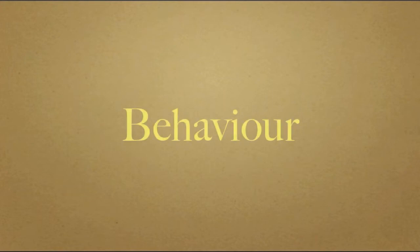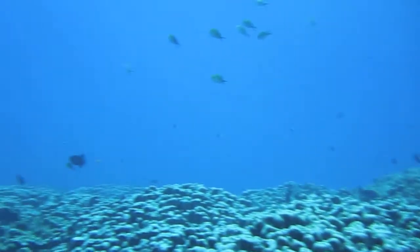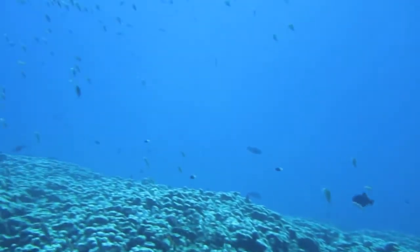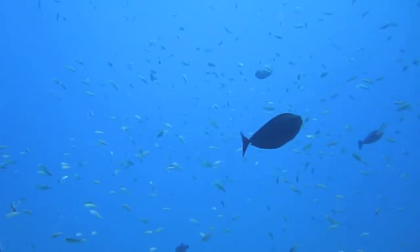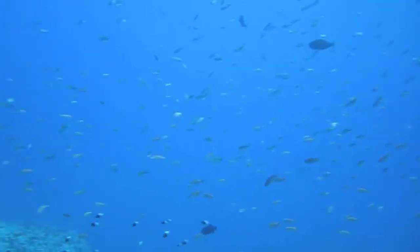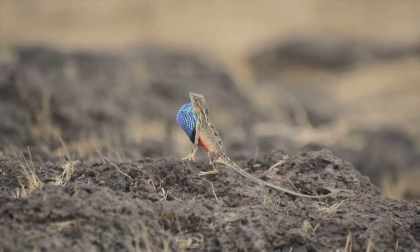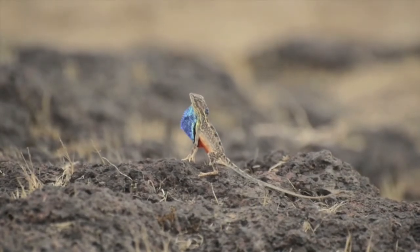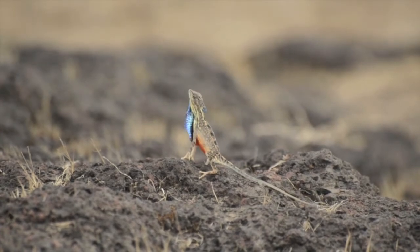Many of us study how and why animals behave the way they do. Behaviour can be studied as interactions between individuals — within or across species — and how those individuals alter their decisions and responses depending on the environment. We also know that behaviours are not always fixed, but are flexible and can evolve.